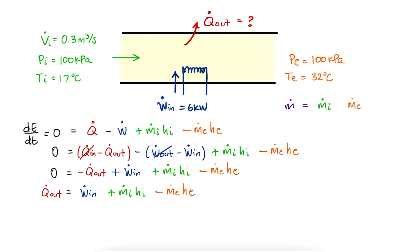If we solve for Q dot, which is what we're looking for, we see that we need the mass flow rate and the specific enthalpy values.